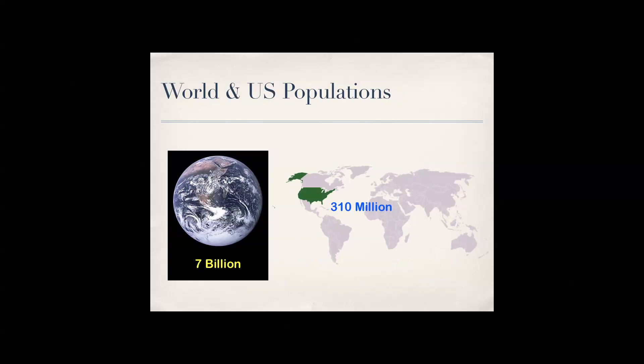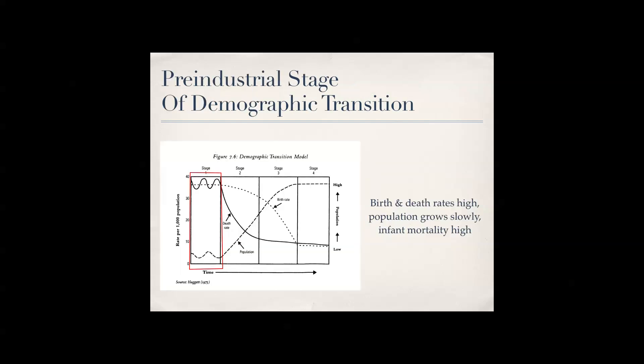World population is approximately 7 billion people as of this year, and America has approximately 310 million people — based on the U.S. census figure of about 308 million, plus roughly 2 million more over two years.